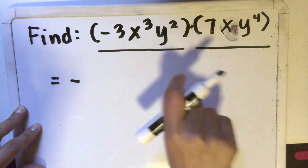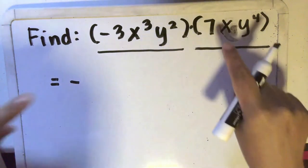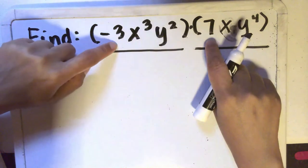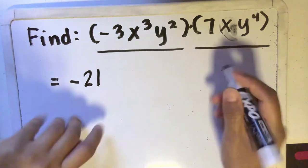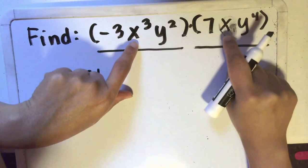And then we will multiply the numerical coefficients. So 3 times 7 is 21. So that's negative 21. And then remember the laws of exponents.